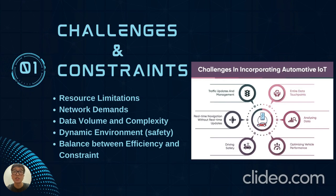The key challenges in the Internet of Vehicles include managing constrained resources like computing power, addressing stringent network demands, handling vast data volumes, adapting to dynamic environments, and balancing efficiency with constraints — all of which pose significant obstacles in IOV systems.